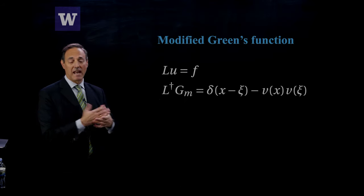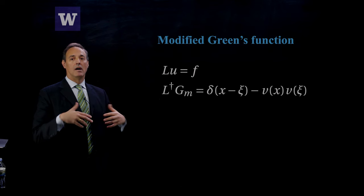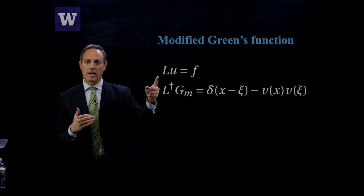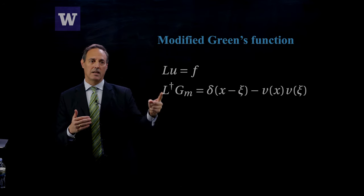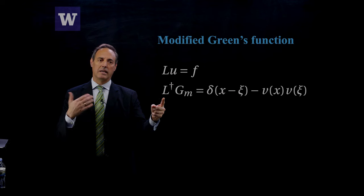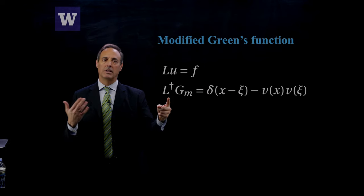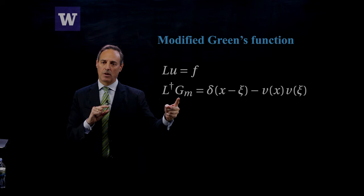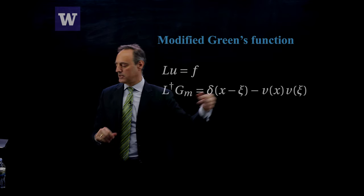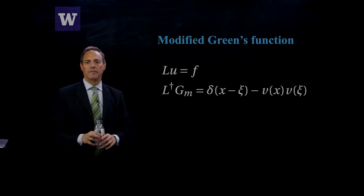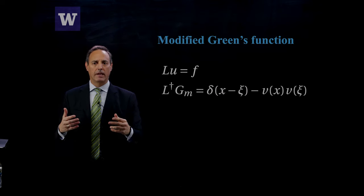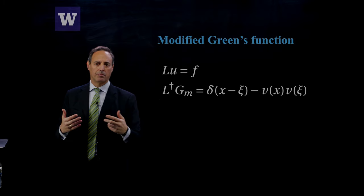Here is the formulation of the modified Green's function problem. I'm solving LU equals F, and going to a generic operator that doesn't have to be self-adjoint. The adjoint problem is L†G_m equals the delta function minus this product of null space functions, where the subscript m denotes the modified Green's function. This is the modification you make when you have a null space in your operator.